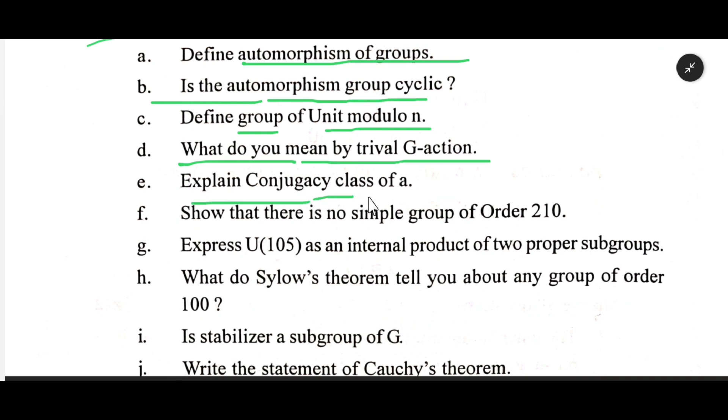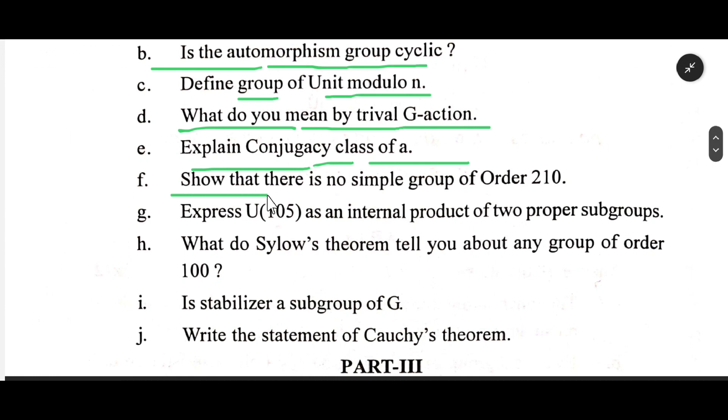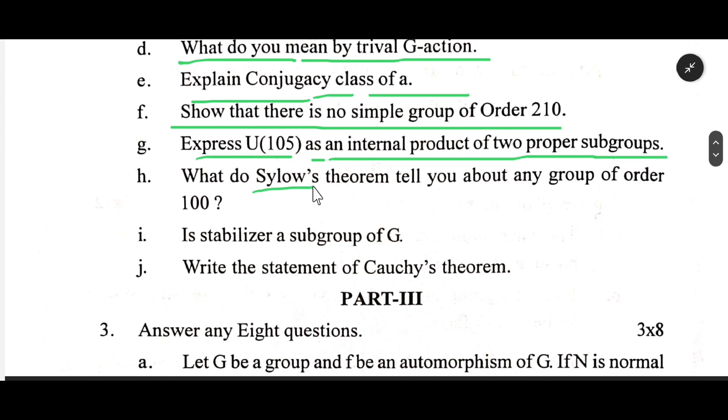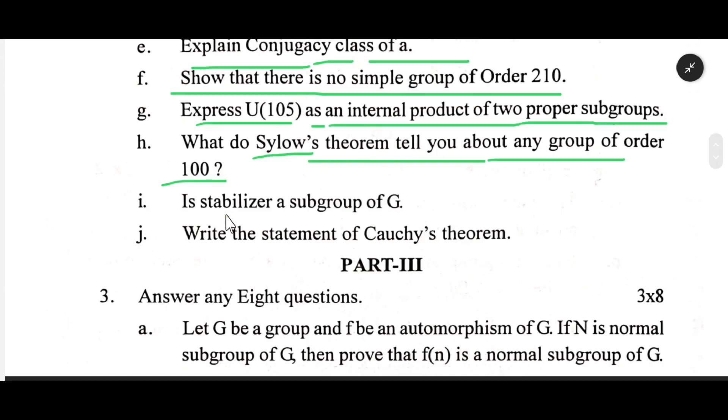Explain conjugacy class of a. Show that there is no simple group of order 210. Express U(105) as an internal product of two proper subgroups. What does Sylow's theorem tell you about any group of order 100?